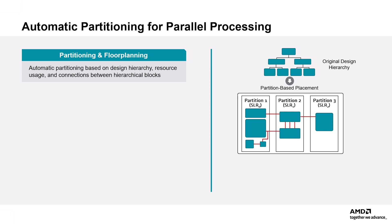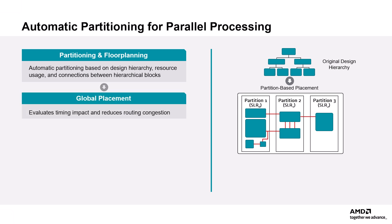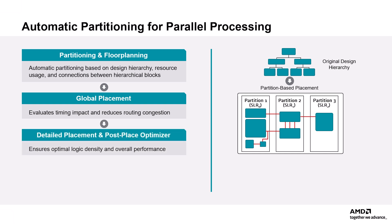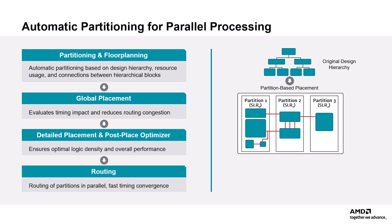and connections between hierarchical blocks, and divides large complex designs into smaller place and route problems that can be solved in parallel. Once partitioned, the design is then placed in parallel, starting with the global placer phase, which optimizes design placement across the entire device with coarse-level timing optimization. Additionally, the placer adds capability to reduce routing congestion in all directions, which significantly improves overall design routability. Finally, once the congestion is reduced, the detailed placer and post-place optimizer refine the placement to ensure optimal logic density and best overall performance.